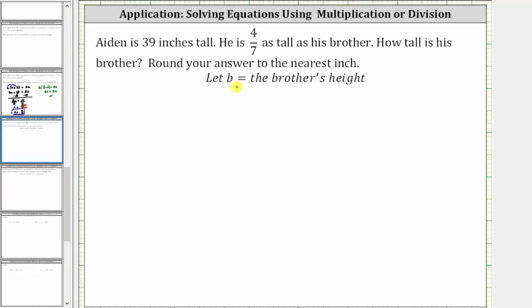Let's let the variable b equal the brother's height. Because Aiden's height is 4/7ths the amount of his brother's height, and b represents the brother's height, Aiden's height is 4/7ths of b, which is 4/7ths times b, which gives us the equation 4/7ths b must equal Aiden's height of 39 inches.